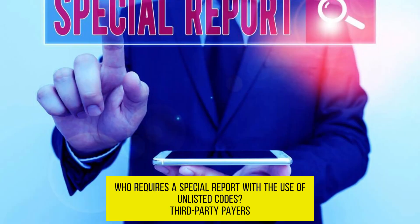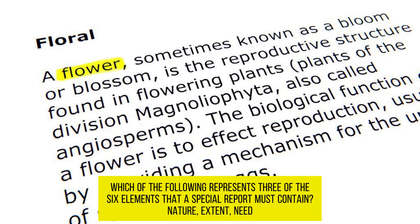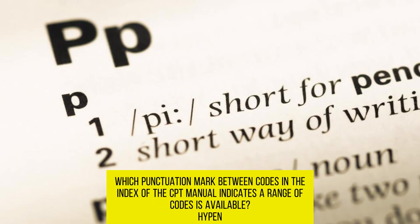Who requires a special report with the use of unlisted codes? Third-party payers. Which of the following represents three of the six elements that a special report must contain? Nature, extent, and need. Which punctuation mark between codes in the CPT index indicates a range of codes is available? Hyphen.